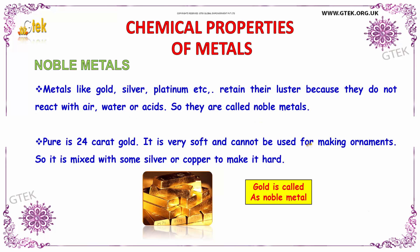So they are called noble metals. Pure gold is 24 carat. It is very soft and cannot be used for making ornaments, so it is mixed with some silver or copper in order to make it hard.